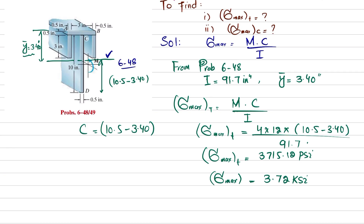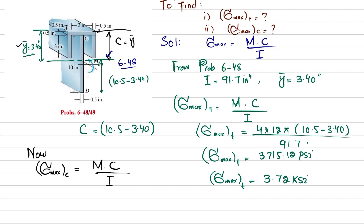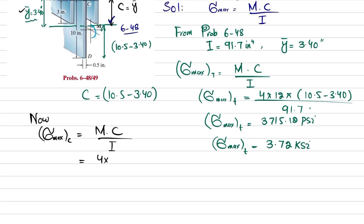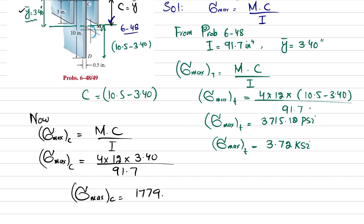Now we will find the maximum bending stress due to compression, which occurs at the top surface. For compression, c equals y-bar = 3.40 inches. So the maximum compressive stress equals the moment of 4 × 12 kip-in times c = 3.40, divided by I = 91.7 in⁴. This gives a maximum compressive bending stress of 1779.07 psi, or approximately 1.78 ksi.